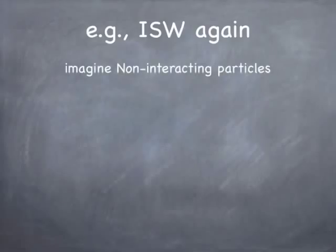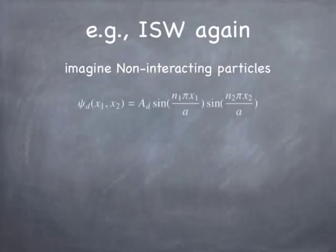I want you to imagine we have an infinite square well. We're going to put particles into the infinite square well that are either bosons or fermions. What we're going to discover is that if you have distinguishable, non-interacting particles in an infinite square well — no potential associated with one particle being near another — you can write a wave function for the pair as simply the product of the wave functions of the individual particles.